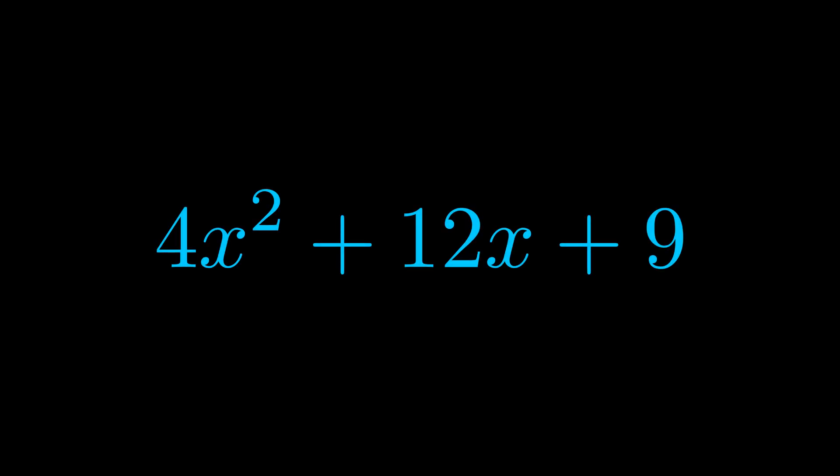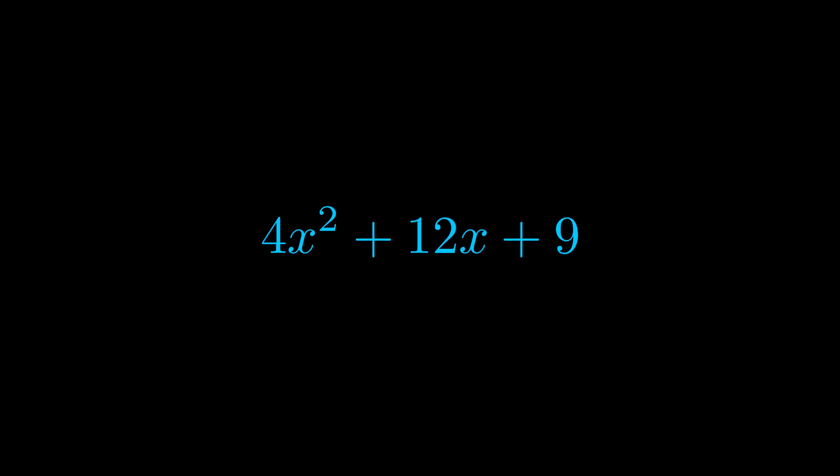Step one when factoring an equation of this form is to multiply the a value by the c value. Here we can see that our a value is the coefficient on the x squared term and our c value is the constant term.